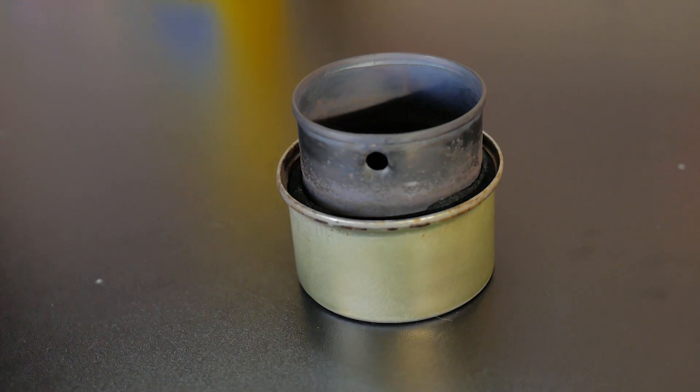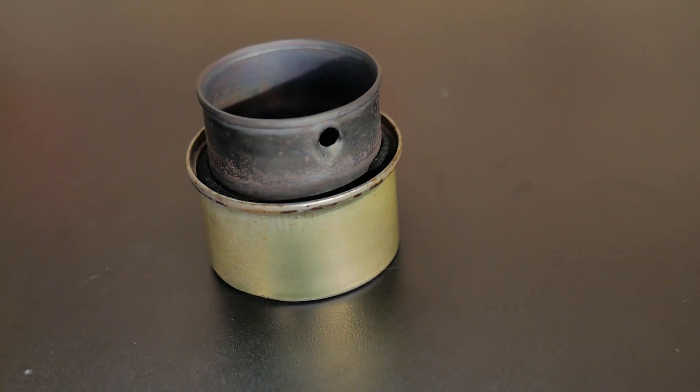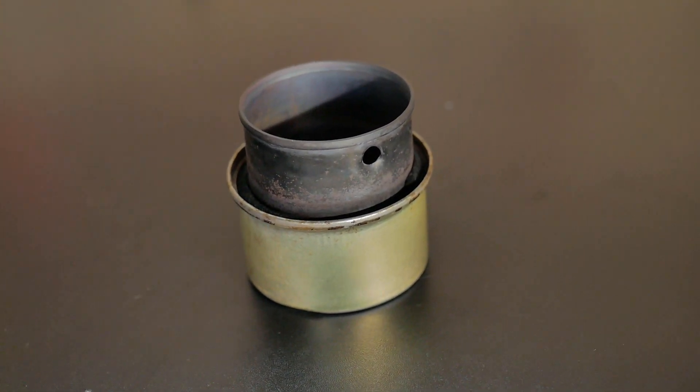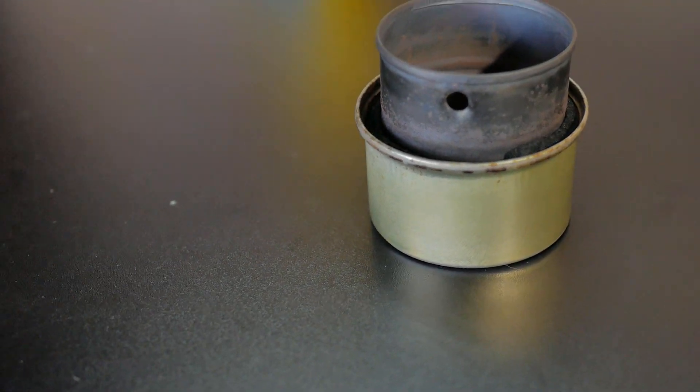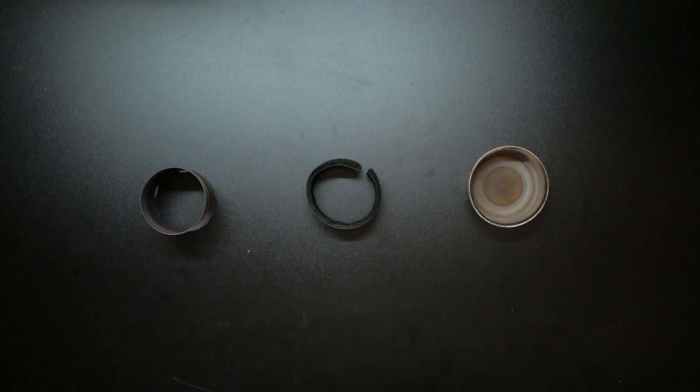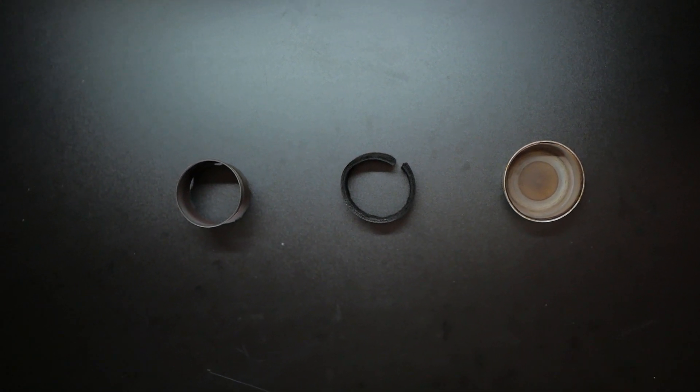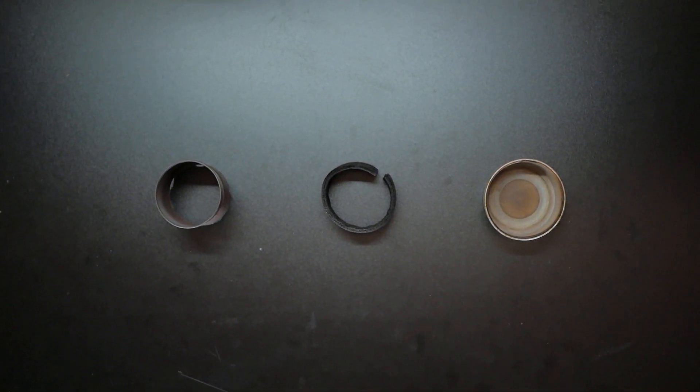The kitty cat stove is actually only made using three key components. That's carbon felt, a tomato paste can, and a fancy feast can. It is extremely reliable. We've used it a countless amount of times. It only requires two ounces of fluid to get a cup of water boiling. So let's get started and clean off our workstation.